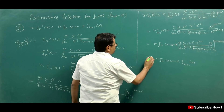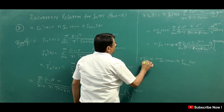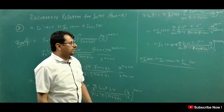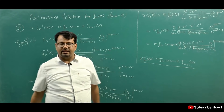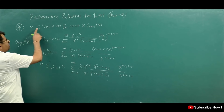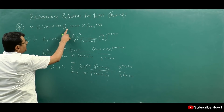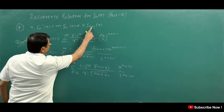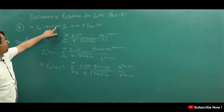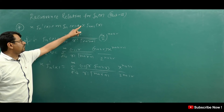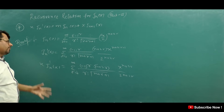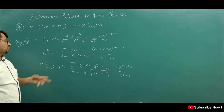So we get x · J_n'(x) = n · J_n(x) + x · summation r = 0 to infinity of [(-1)^r / ((r-1)! · Γ(n+1+r))] · (x/2)^(n+2r). Taking x outside, this becomes x · J_n'(x) = n · J_n(x) - x · J_{n+1}(x). So student, this is the first recurrence relation proved. The method for the second relation is 50% the same — we write J_n(x), differentiate, multiply, and simplify — but we change n to -n.